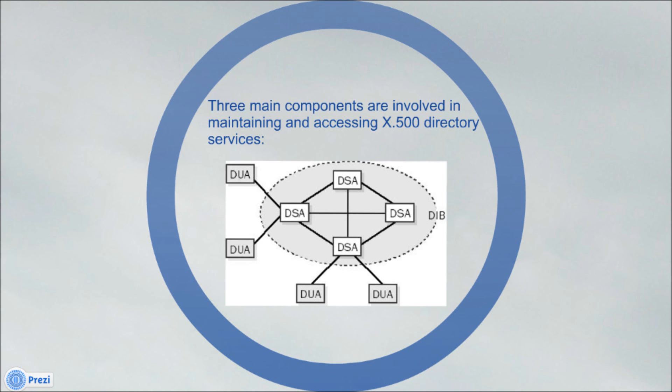Three main components are involved in maintaining and accessing X.500 directory services. When a DUA issues a query, the query travels through a chain of DSAs and the result set travels back along the same chain. These queries use DAP, while DSAs communicate with each other using the directory system protocol.